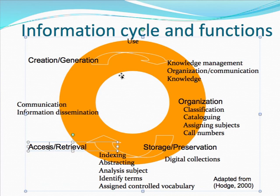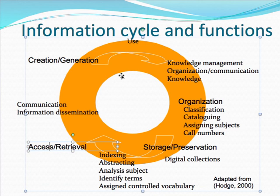We have to understand that librarianship as a whole means everything is interrelated. So if we want to be good reference librarians, we have to understand indexing, we have to understand abstracting, we have to understand how a subject is assigned, we have to understand what descriptors are, and we have to understand what controlled vocabulary is. That way, we can be better reference librarians — everything is interrelated.